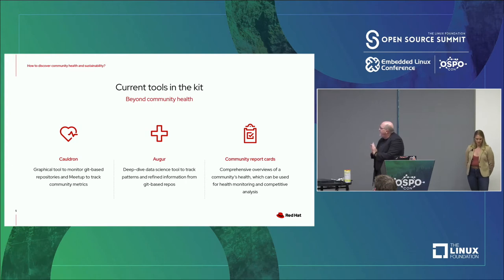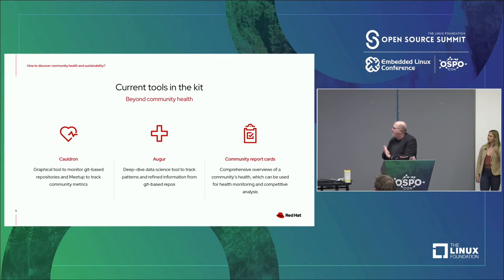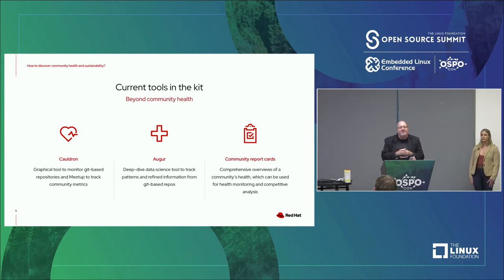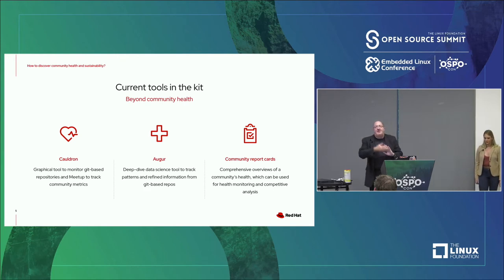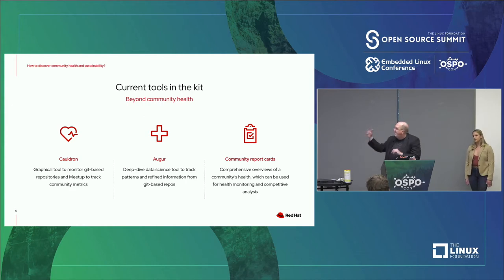Cauldron is a tool in our toolkit that we use. It comes from the vendor Bitergia and is a Grimoire Lab-based tool with Elasticsearch running in the back end. It really does a good job of looking at one community at a time and giving us graphic feedback of measurable results. We're looking at things like time to first response for pull requests, and demographics of organizations involved in a community.